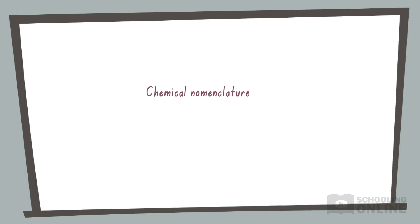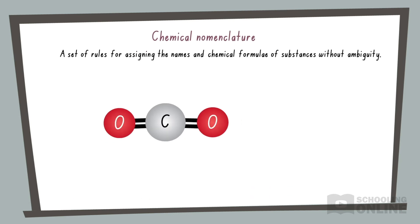There are two parts to chemical nomenclature: naming chemicals and writing their chemical formulae. For example, when one carbon atom bonds to two oxygen atoms, we call the compound carbon dioxide and write the formula CO2.